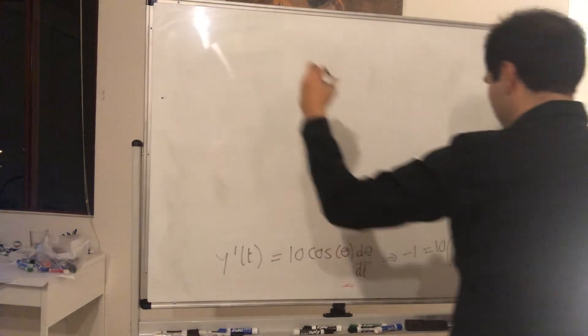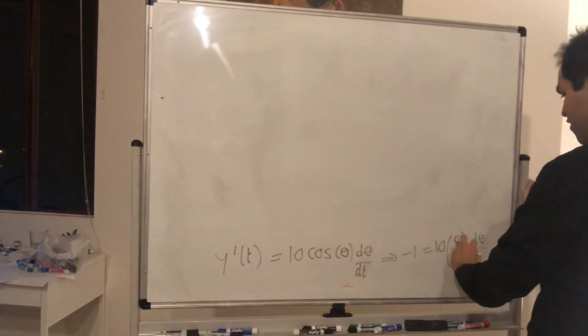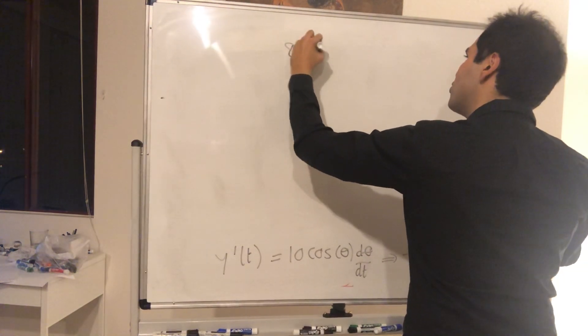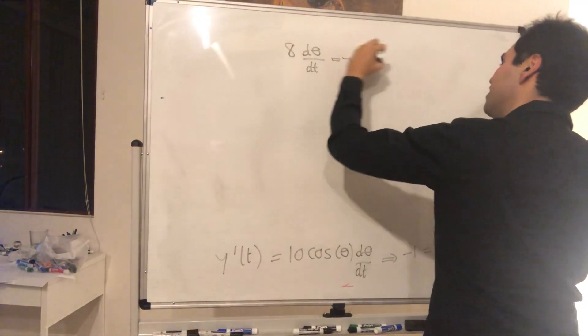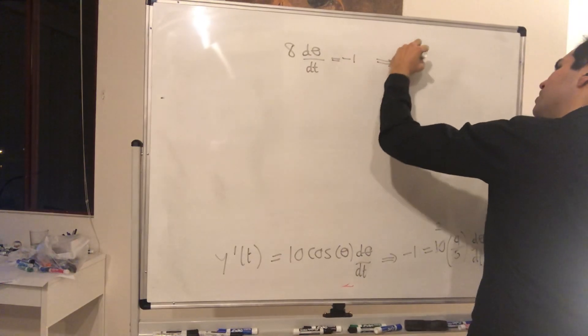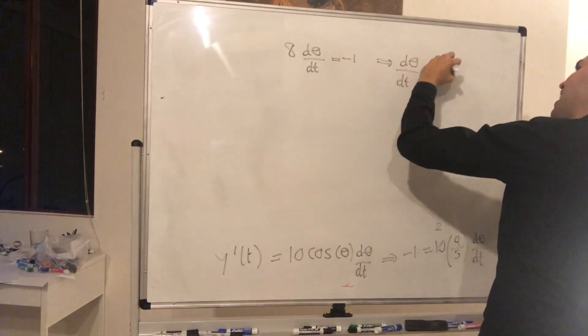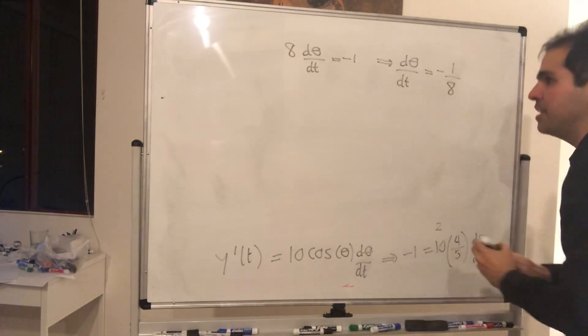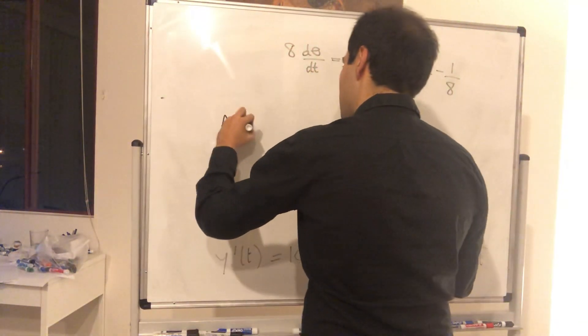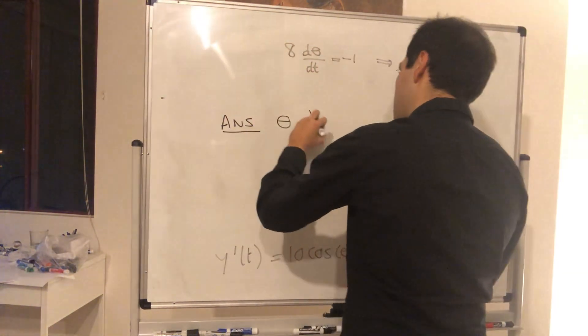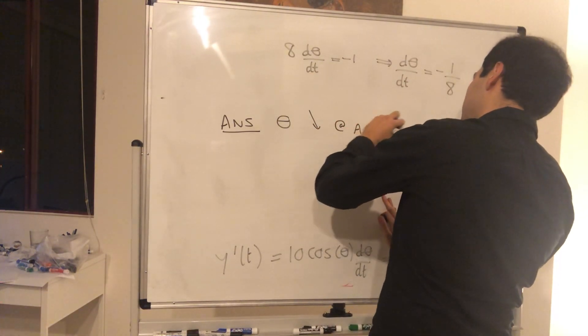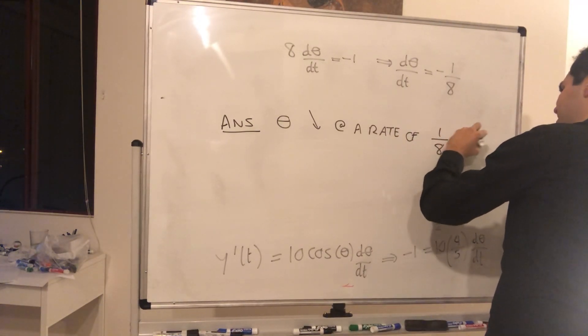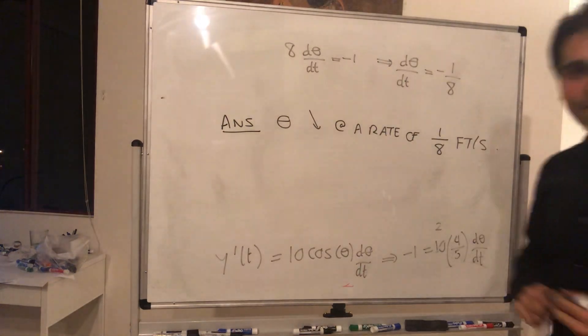So what we get is minus 1 eighth. So what's the answer? The answer is simply that d theta over dt is minus 1 eighth. So theta decreases at a rate of 1 eighth feet per second. Very nice.